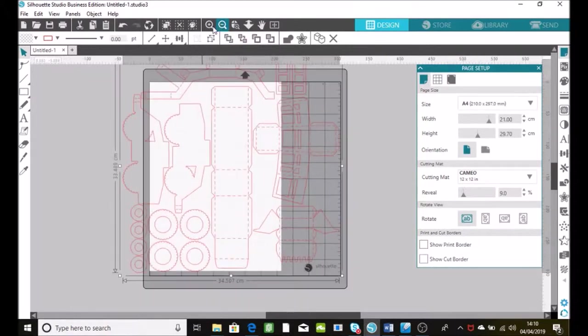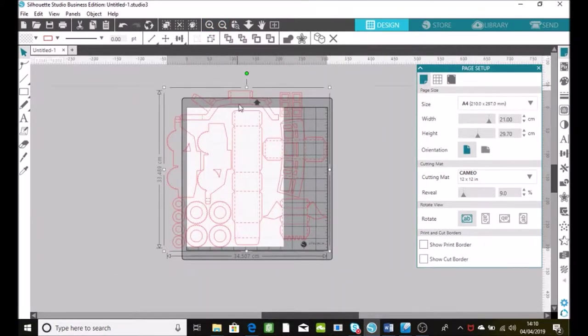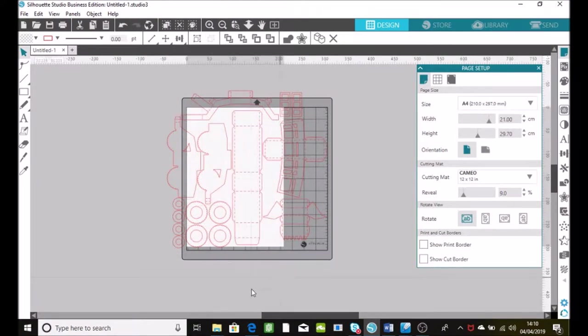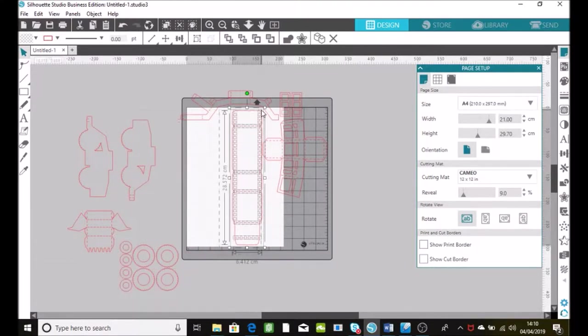Okay, so once I've done that I'm going to ungroup everything because I need to move it around the page. Then what I'm going to do is take each piece separately and make sure that they're grouped together so when I move it I'm moving everything, all the cutting lines and all the edges of it.